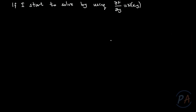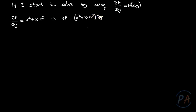Now let's see what happens if we start solving the given exact differential equation by starting with the partial derivative of f with respect to y equals N(x,y). We have ∂f/∂y = N(x,y), that is x² + xe^y. This equation can be rewritten as df = (x² + xe^y) dy, and then we integrate both sides with respect to y.